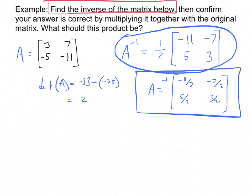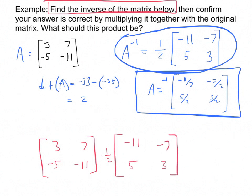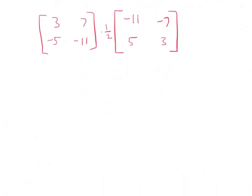But the point that I wanted to make is, what happens if you take one of these matrices and multiply it with the original matrix? I'm going to go ahead and go with the undistributed one first. So what happens when I do 3, 7, negative 5, negative 11, and multiply it with 1 half, negative 11, negative 7, 5, 3.